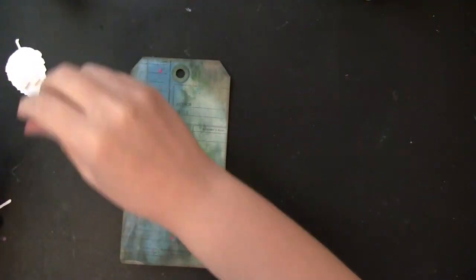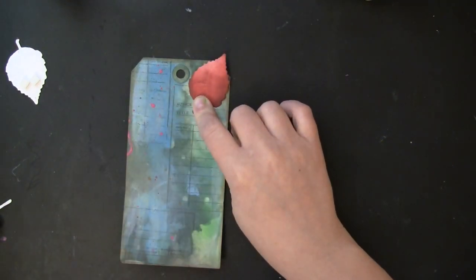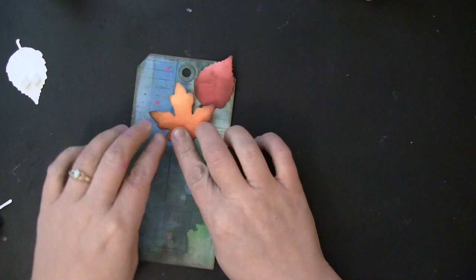I dried that, and now I'm ready to adhere the leaves. I put foam squares on the top portion of the leaves, and glossy accents at the bottom.